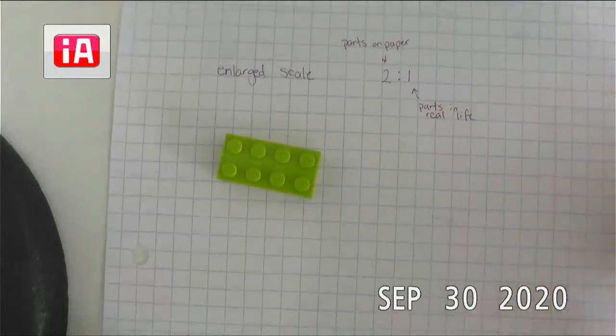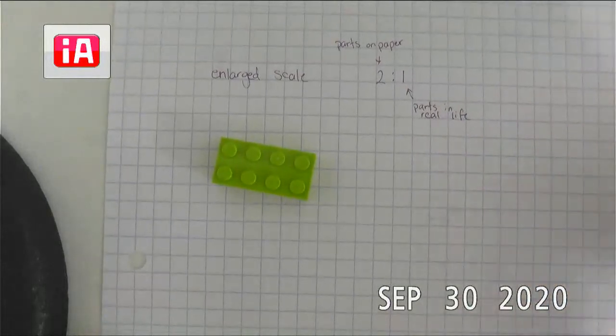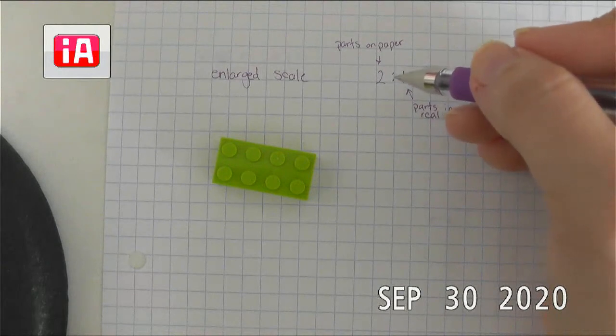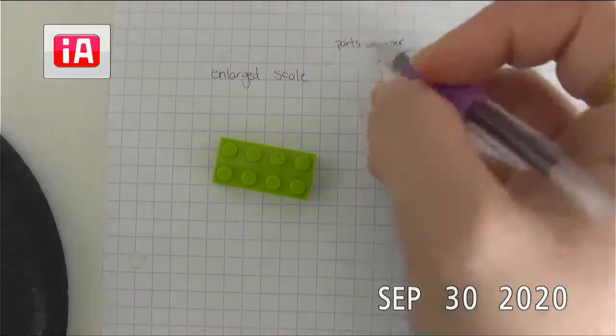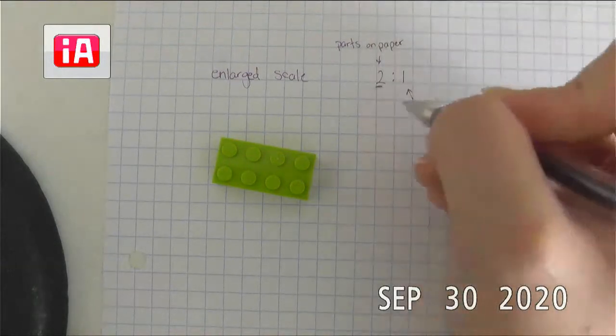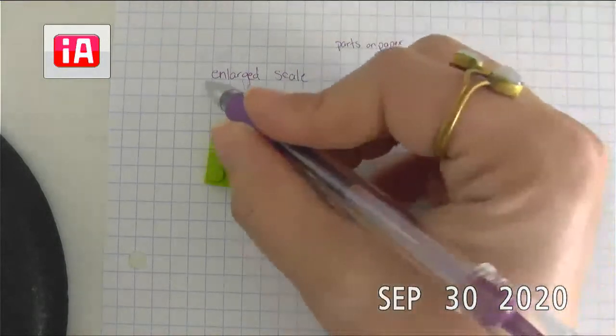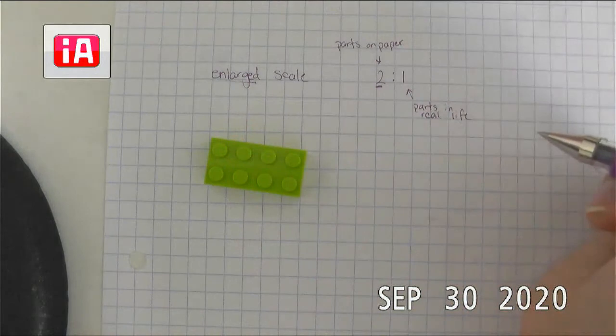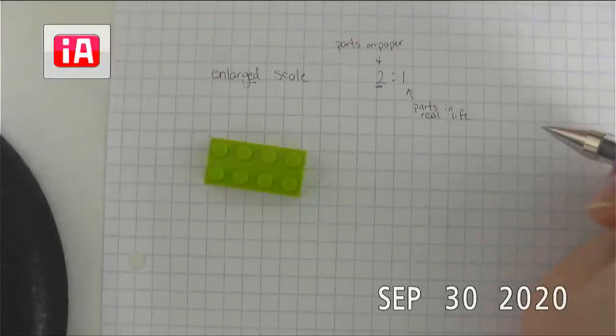So this is a good tip as to whether we are going to be doing a reduced scale or an enlarged scale. If the first number in our ratio is bigger, that will mean an enlarged scale. If the second number in our ratio is bigger, it's going to mean a reduced scale.